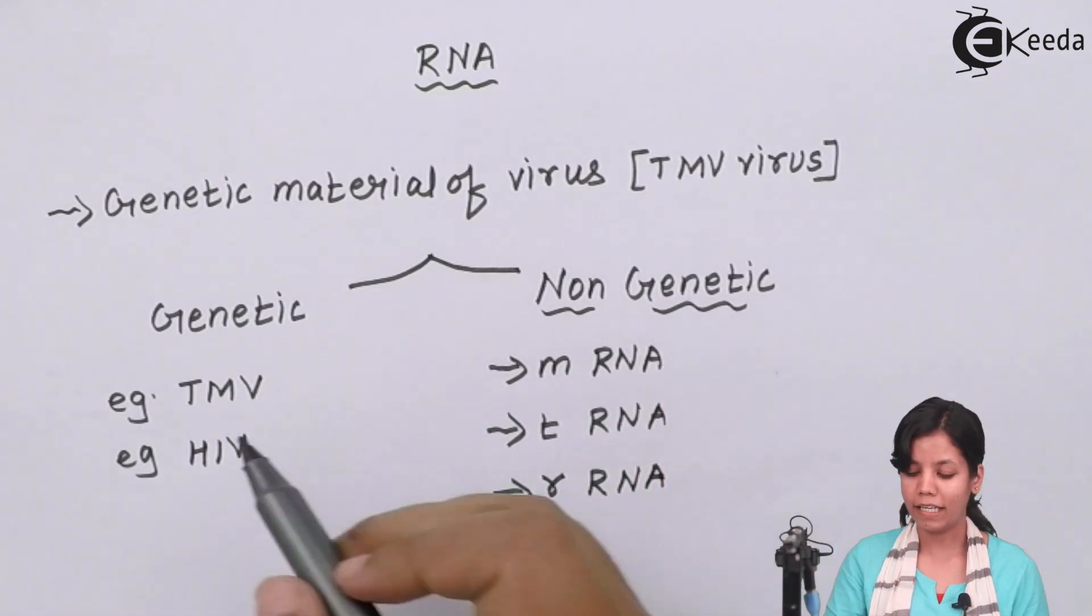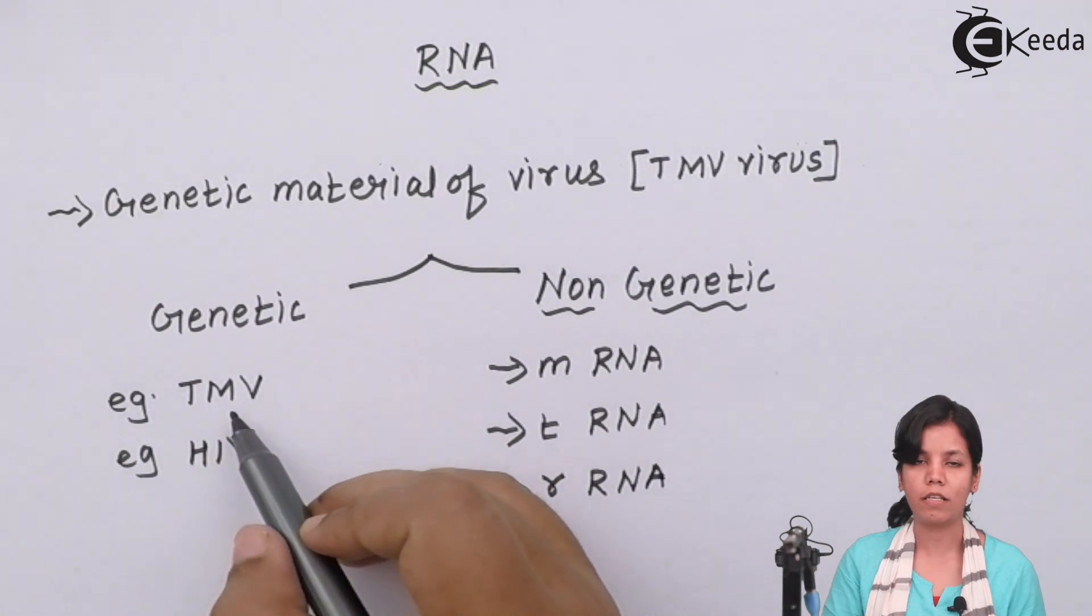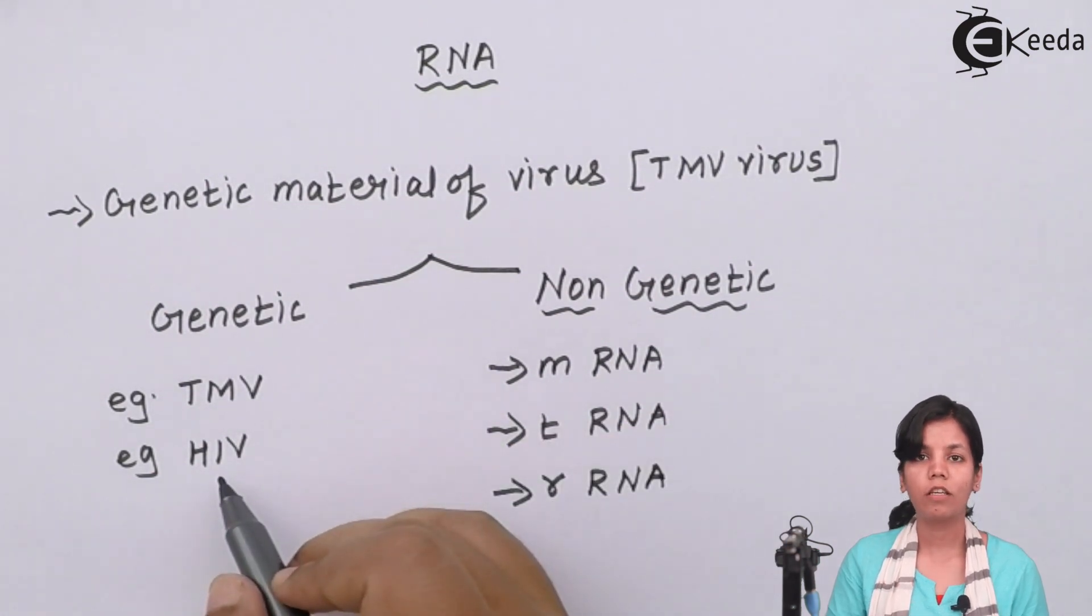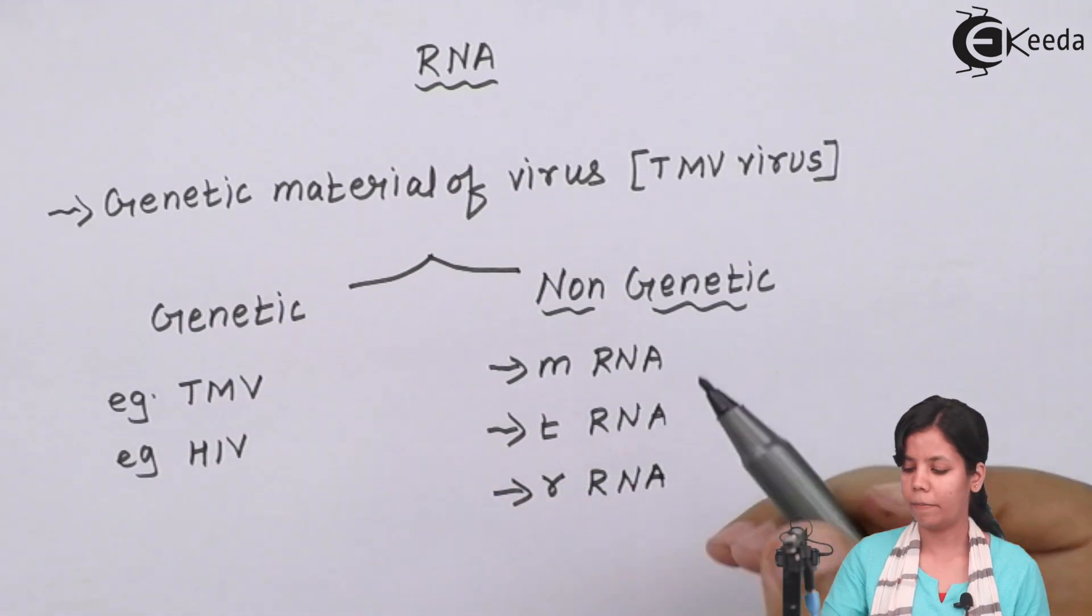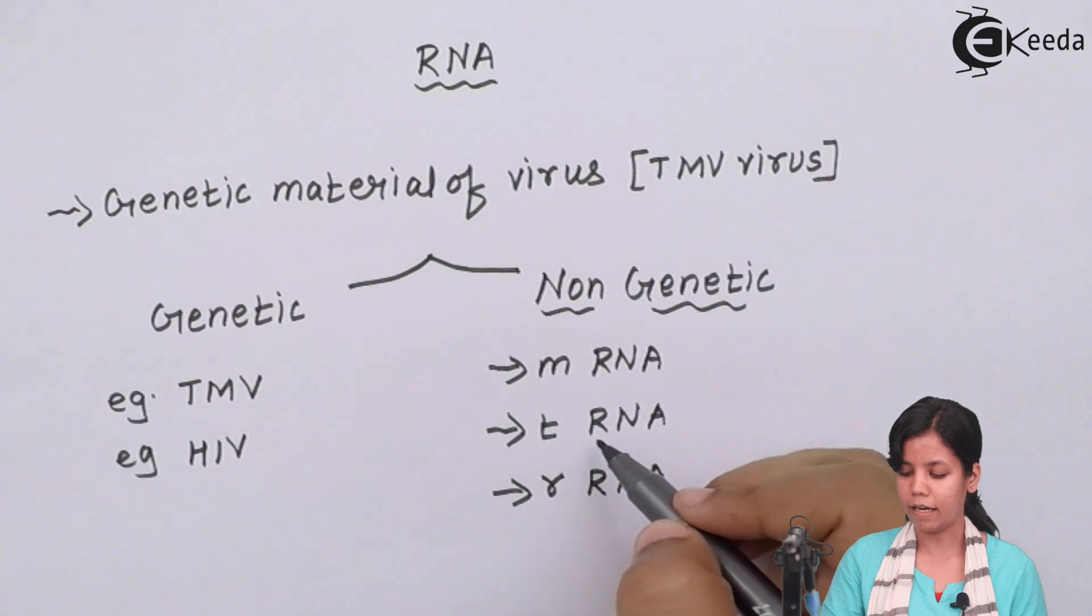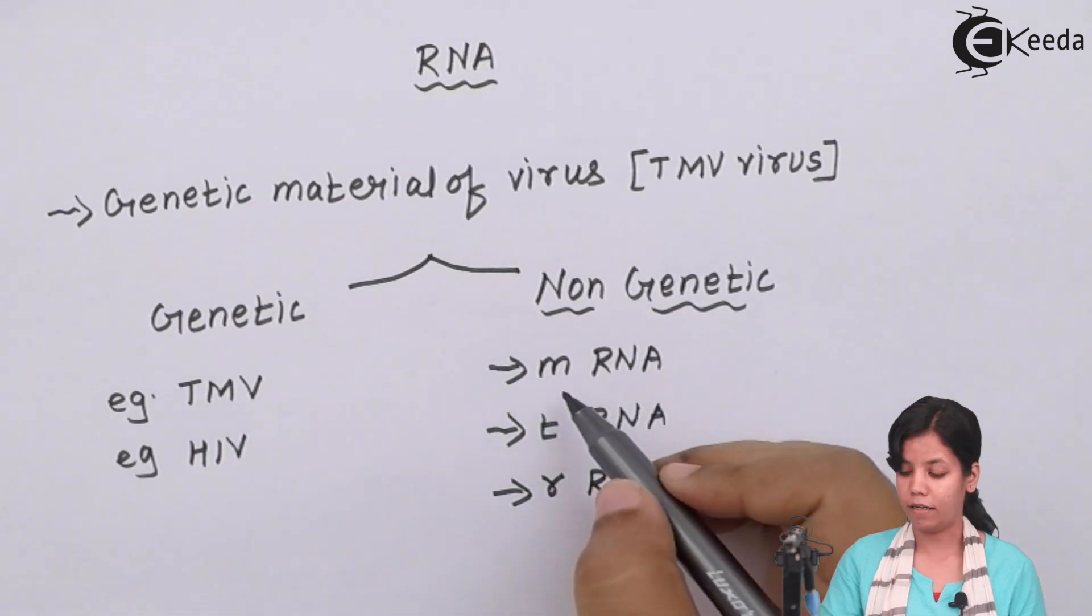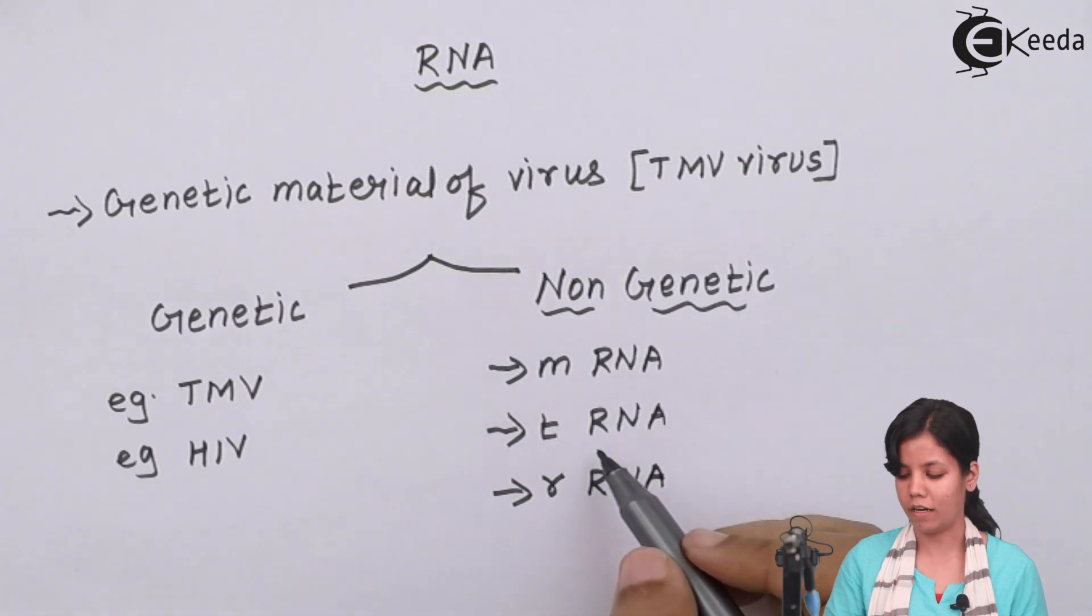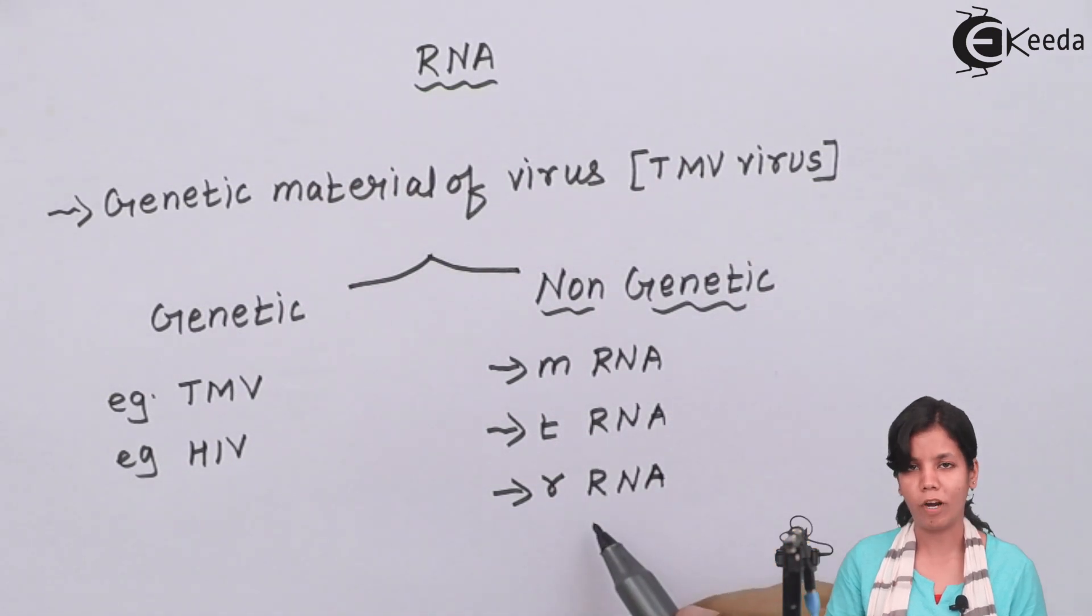Now genetic RNA, an example of genetic RNA would be TMV, that is tobacco mosaic virus, the virus that infects plants, sometimes cotton plants or tomato plants. Another is HIV, the very well-known virus to human beings. The genetic material of HIV is RNA. Non-genetic mRNA, tRNA, and rRNA. When I say mRNA that is messenger RNA, tRNA is transfer RNA, and rRNA is ribosomal RNA.